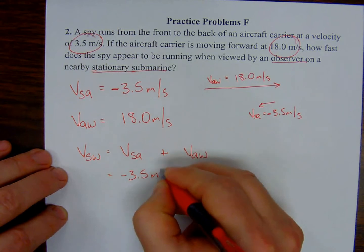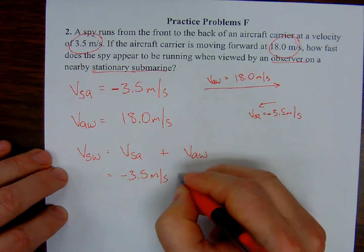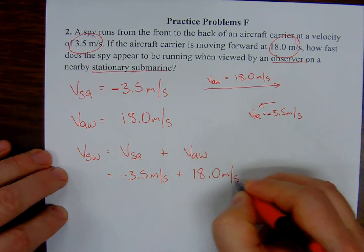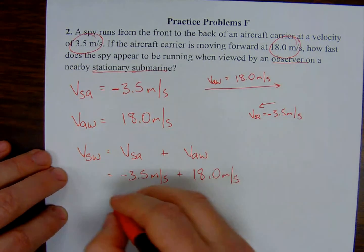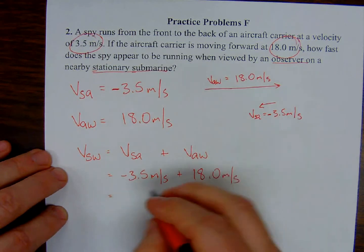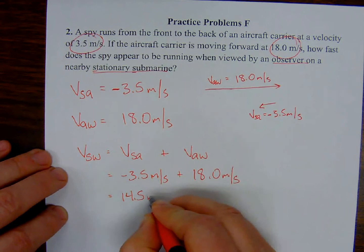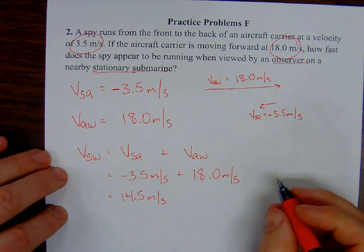And for those of you who are thinking, oh, the 3.5, that has two sig figs. So the answer should have two sig figs. No. Remember, this is addition. And when we're doing addition, we consider how many decimal places there are. And both of these have one decimal place. So my answer is going to have one decimal place. So it's a little bit tricky there.